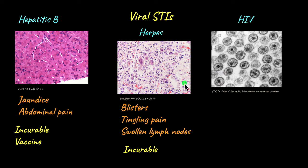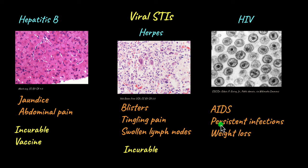Another common viral STI is HIV, the human immunodeficiency virus. HIV is dangerous because it attacks T cells (T lymphocytes) of the immune system, destroying them and weakening immunity. As the immune system weakens, it leads to persistent recurring infections, weight loss, and opportunistic infections that a healthy immune system would normally prevent. Ultimately this can lead to acquired immunodeficiency syndrome (AIDS), in which the immune system has totally collapsed, leaving the person extremely vulnerable to infections like tuberculosis and cancer.